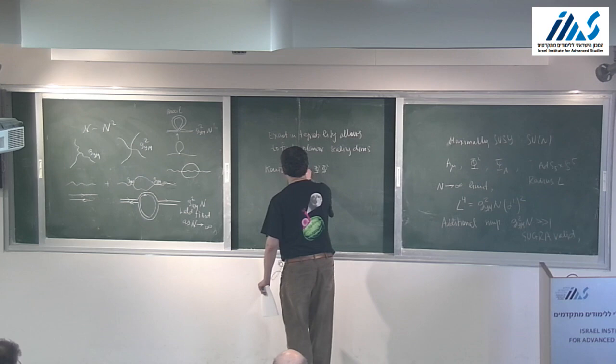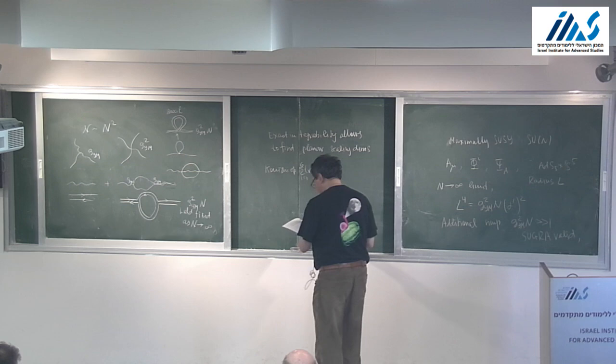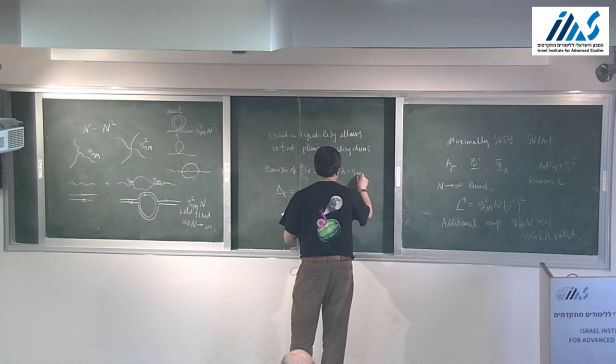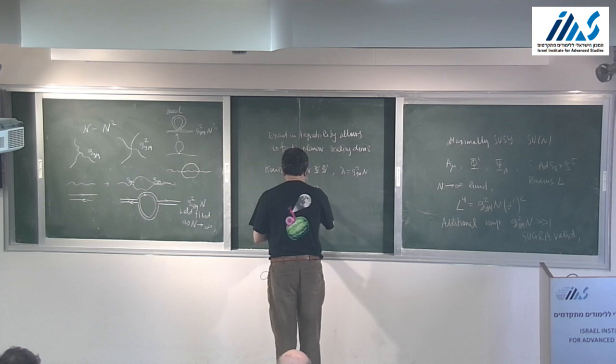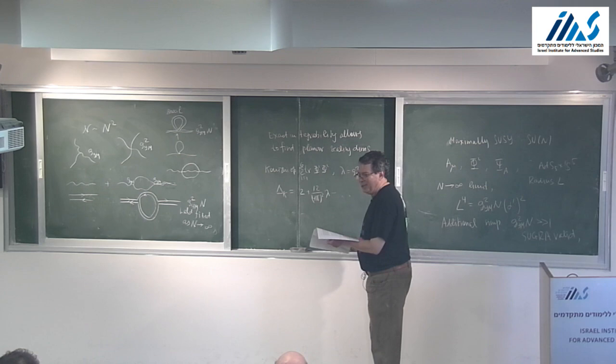For the Konishi operator, defining λ = g_{YM}² N, the scaling dimension is Δ = 2 + (12/4π²)λ + .... This is now known to many loops — perhaps 12 loops — with amazing precision.